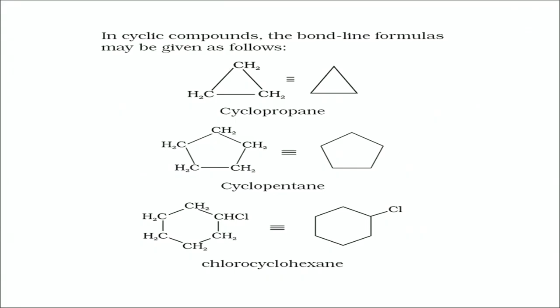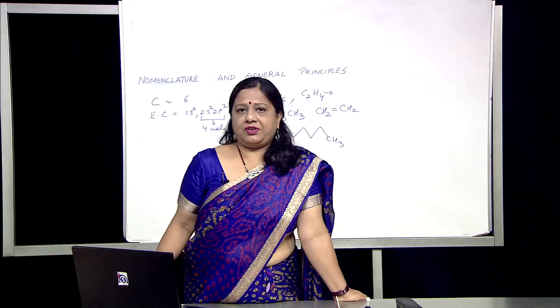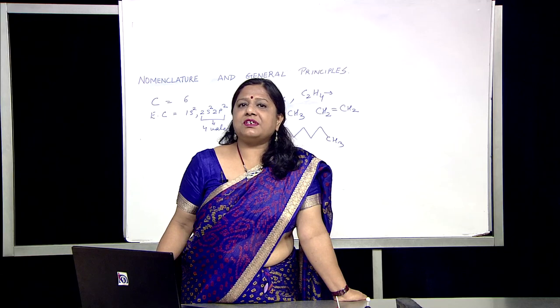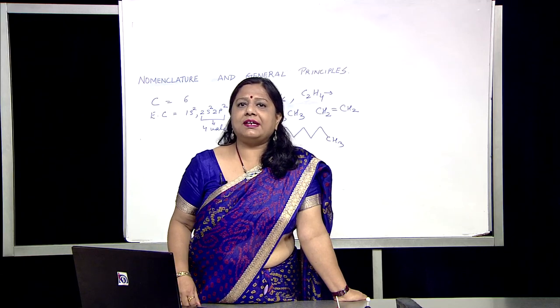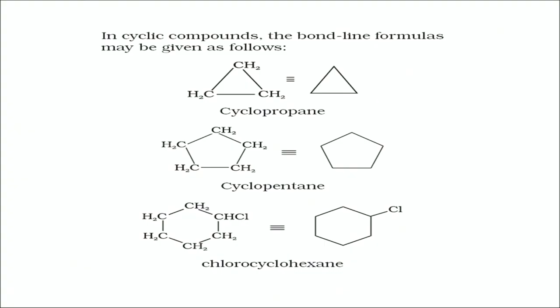In cyclic compounds, bond-line formulas are used for cyclopropane, cyclohexane, cyclopentane, chlorocyclohexane, etc. They are represented only by lines. If you open those lines, you can see that carbons are at the peaks and the remaining valencies are satisfied by hydrogen.